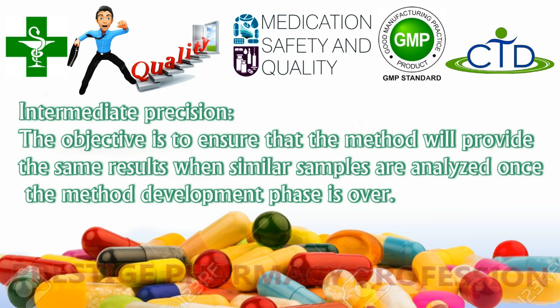Intermediate precision is the next step after confirming uniformity and accuracy of analytical results during method development. Once an analytical method is fully developed, its accuracy is checked at different laboratories with different operators. The objective is to ensure that the method will provide the same results when similar samples are analyzed once the method development phase is over.